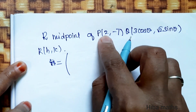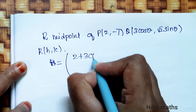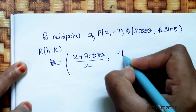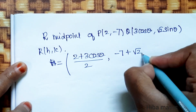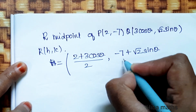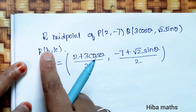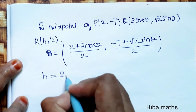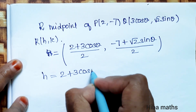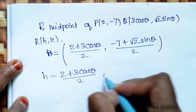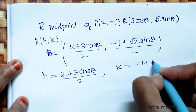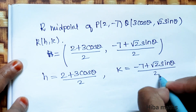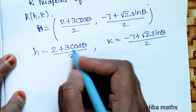Applying the midpoint formula: h = (x₁ + x₂)/2 = (2 + 3 cos θ)/2, and k = (y₁ + y₂)/2 = (-7 + √2 sin θ)/2. So h = (2 + 3 cos θ)/2 and k = (-7 + √2 sin θ)/2.